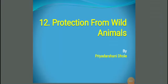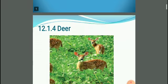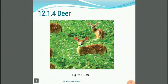Good morning students. This is part number two of protection from wild animals, which is crop production and technology, chapter number four. We already started about three animals. Now the fourth animal is a deer.